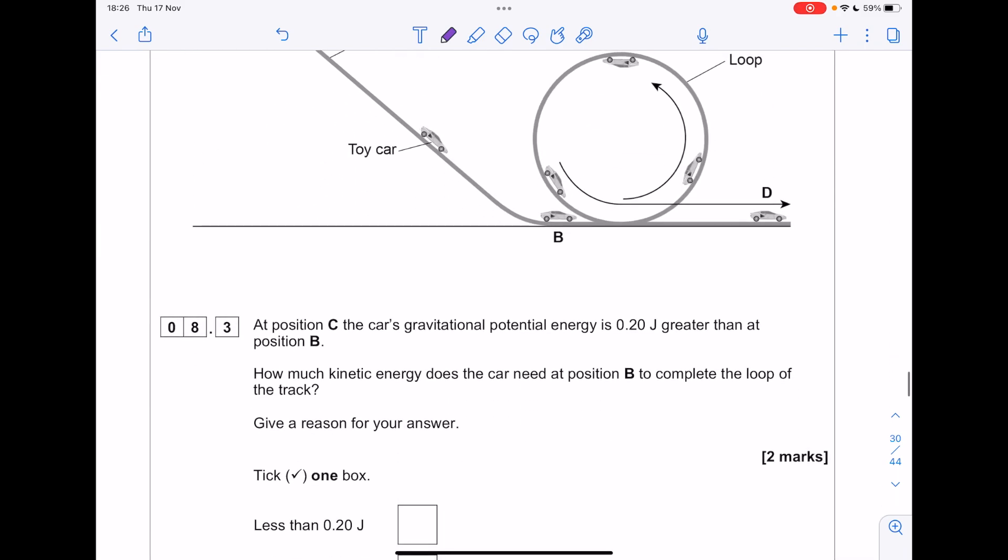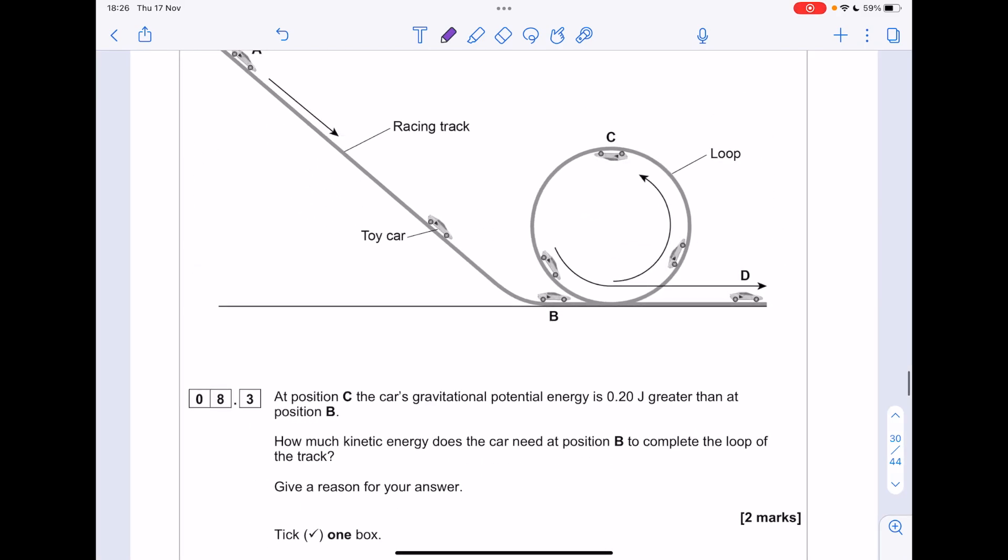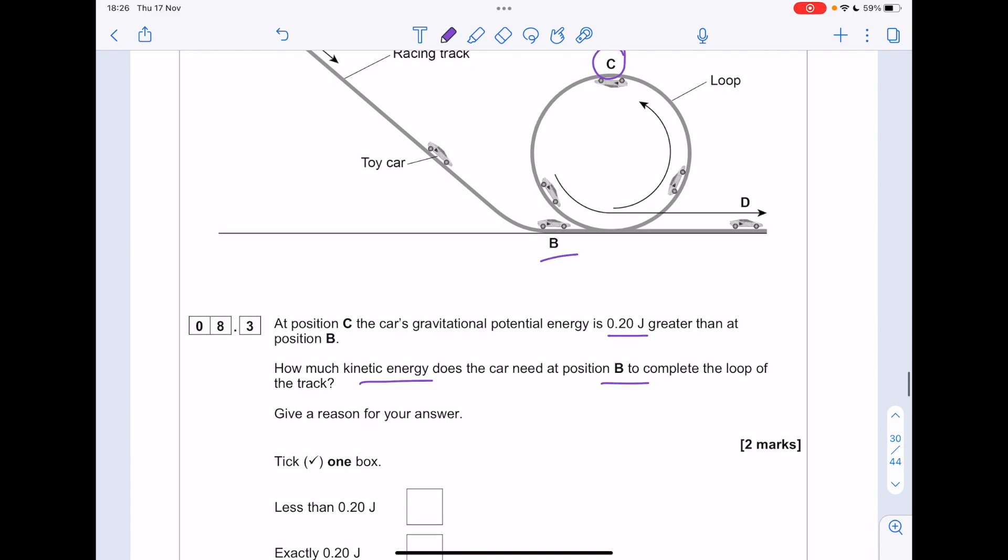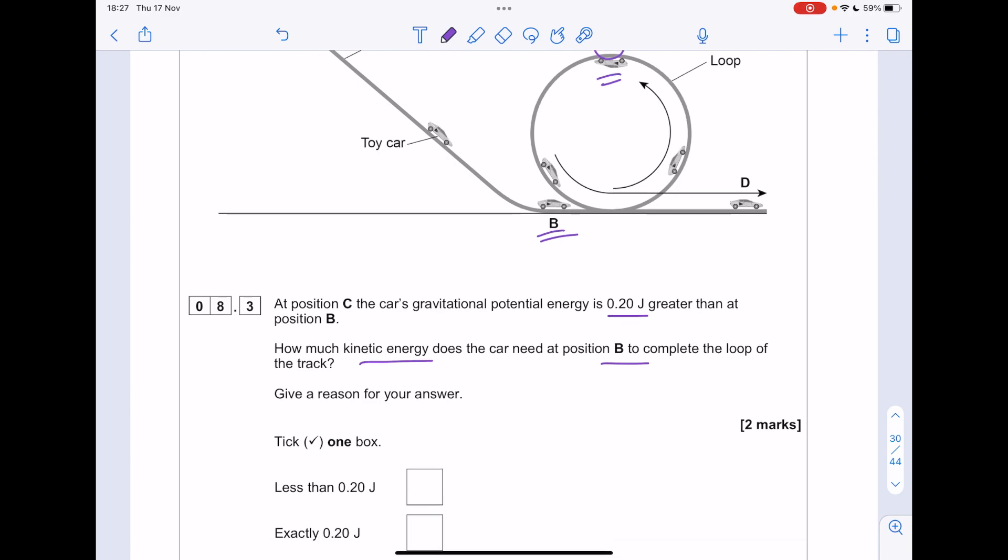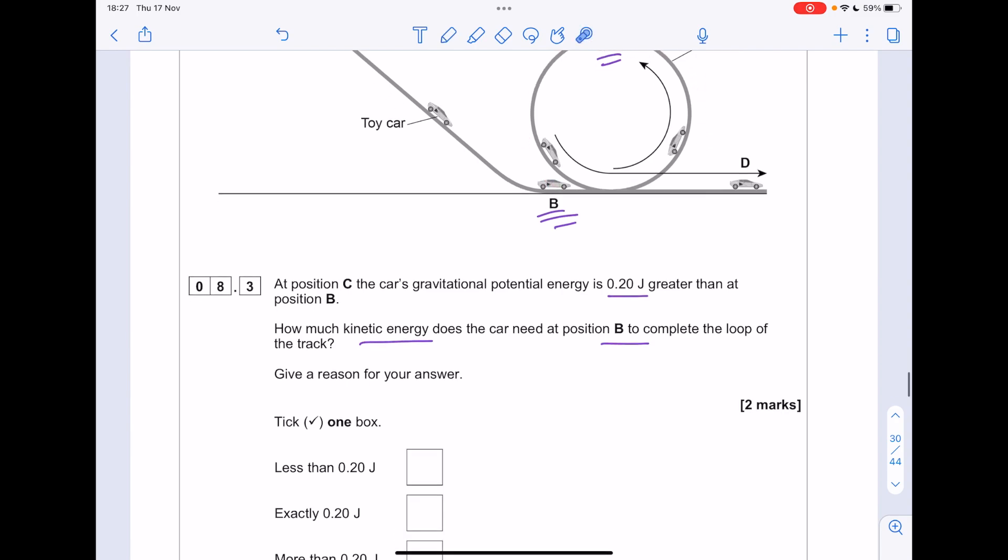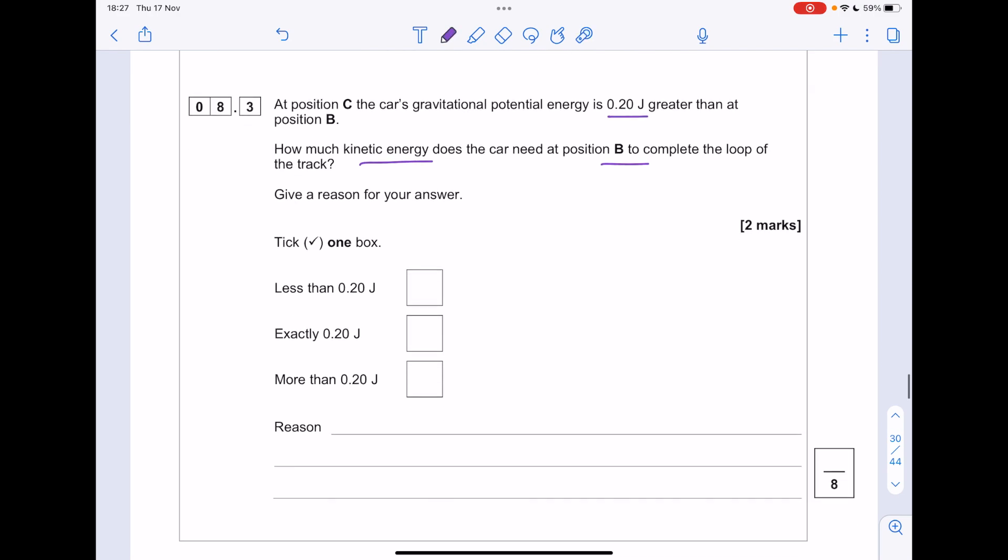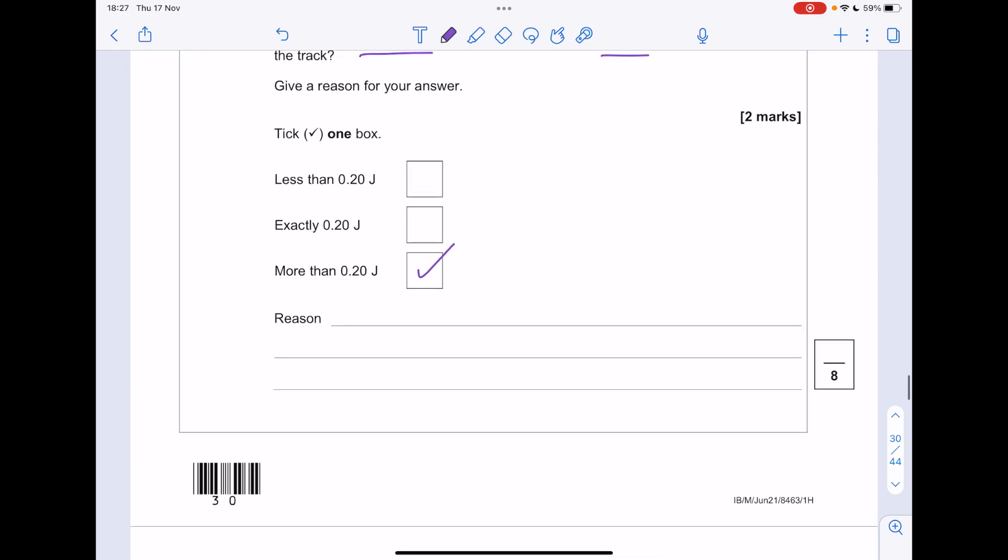Figure 11 is repeated below. At position C here, the car's gravitational potential energy is 0.2 joules greater than it was at B. How much kinetic energy does the car need at position B to complete the loop? Give a reason for your answer. So we're comparing position B here. Look, it's going to have to go all the way up there. So actually, it's going to need more than 0.27 joules. And why is that? Because the car needs to be moving to complete the loop.